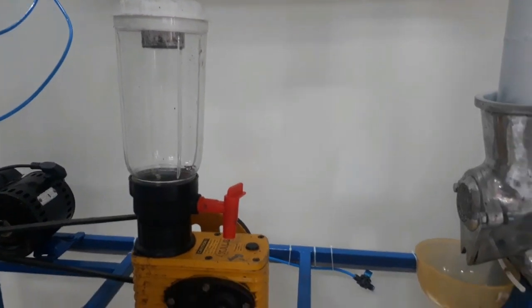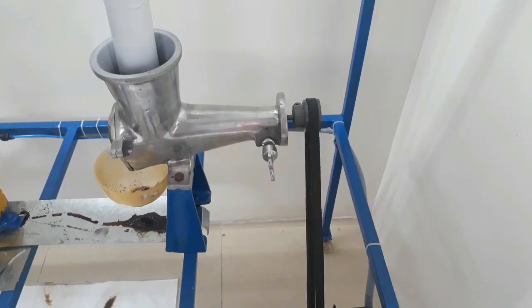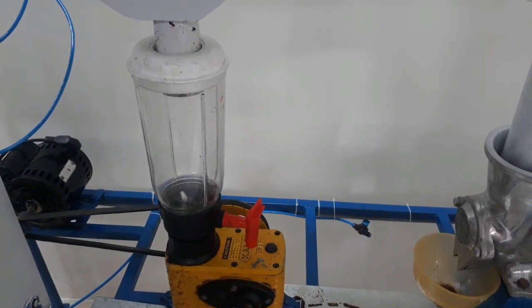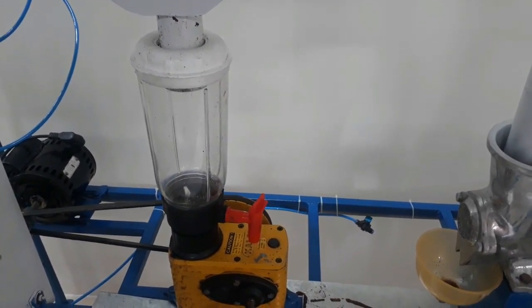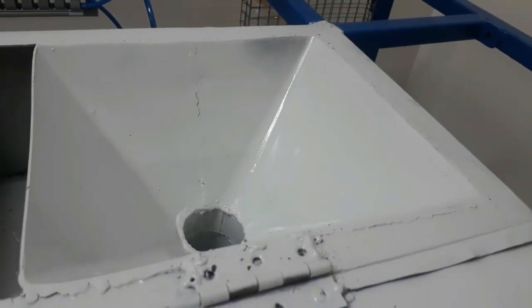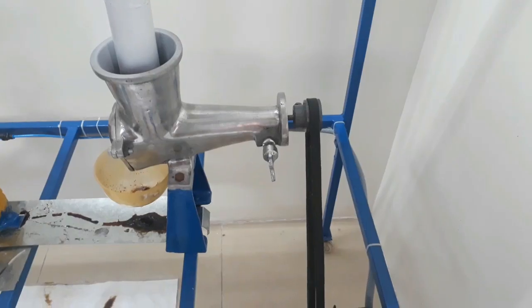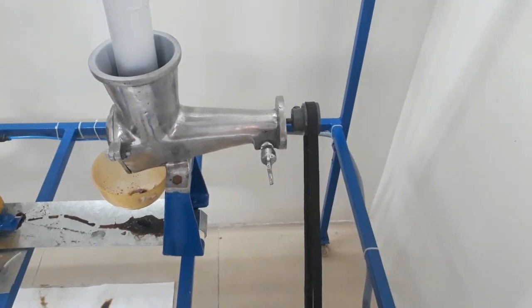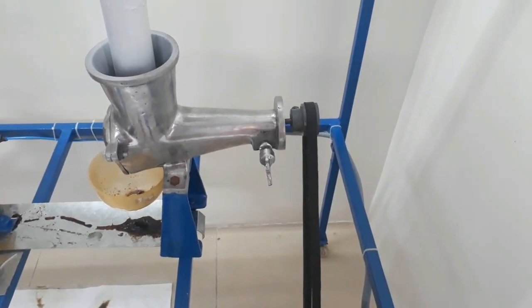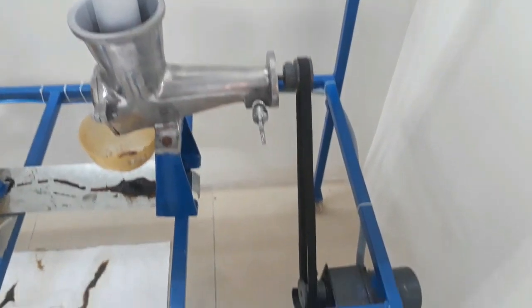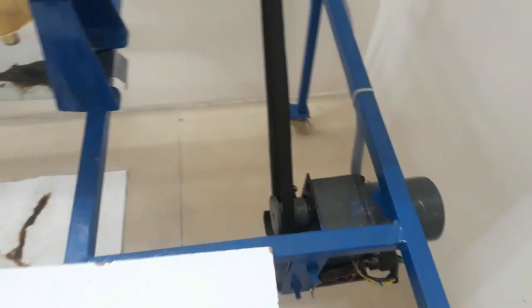It has two units: one is a squeezer unit and another is a mixer unit. This mixer unit can mix like apple, orange. The squeezer is used for orange fruits. It is driven by motor, both squeezer unit and mixer unit are driven by motor.